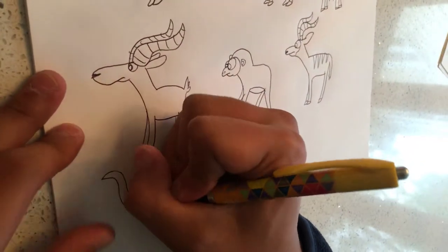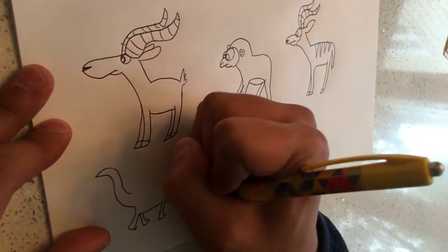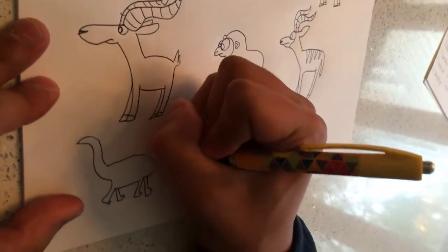B is also for the bear cat, also known as the binturong. To draw the binturong, it needs shaggy ears.